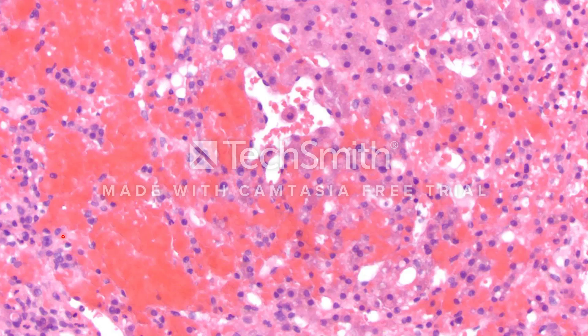Additionally, notice the hepatocytes — they look small and atrophic. And this is what Budd-Chiari syndrome does. The hepatocytes immediately around the central vein, remember that's where the maximum back pressure accumulates, those hepatocytes tend to get small and atrophic.